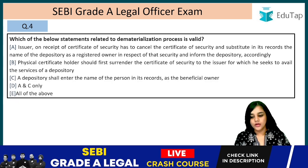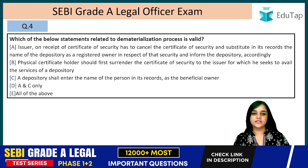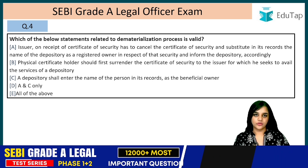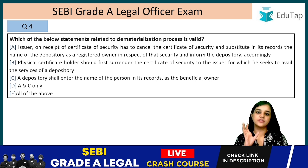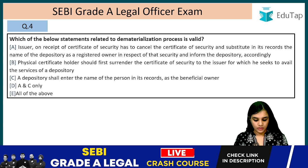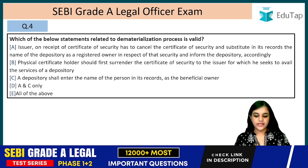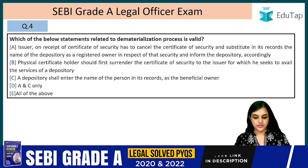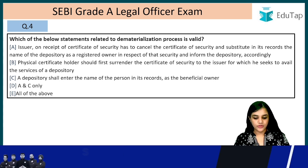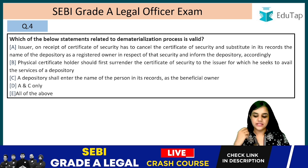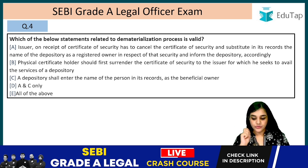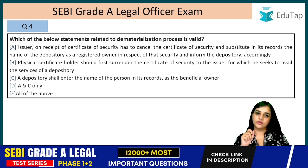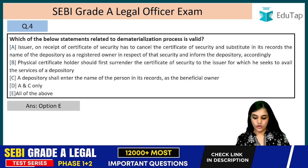Question 4: Which statement related to the dematerialization process is valid? Dematerialization is a process by which the physical certificate of an investor is converted into electronic form. The statements are: (1) The issuer, on receipt of the certificate of security, must cancel it and substitute the depository's name as registered owner in its record and inform the depository accordingly. (2) The physical certificate holder should first surrender the certificate to the issuer. (3) The depository shall enter the person's name in its record as beneficial owner. All are correct — the answer is all of the above.